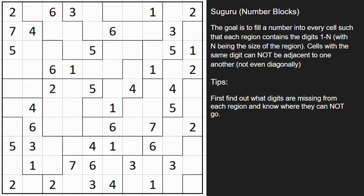The goal here is to fill in every cell such that each region contains the digits 1 through n, with n being the size of the region. So if you have a four-celled region, you're going to be putting in the digits 1, 2, 3, and 4, and so forth.